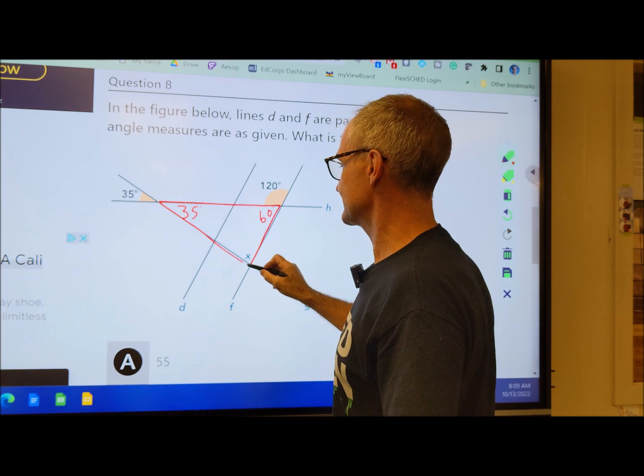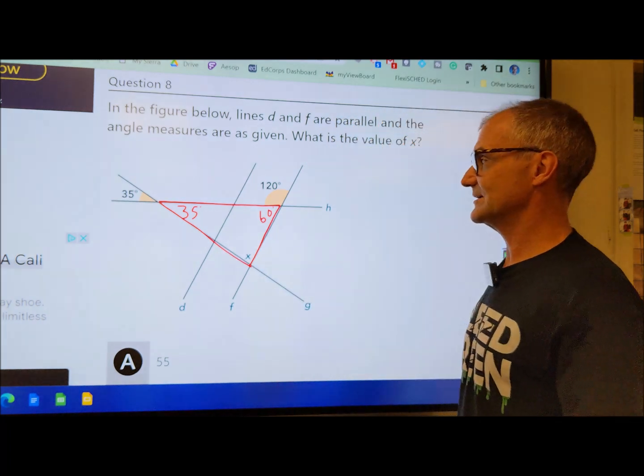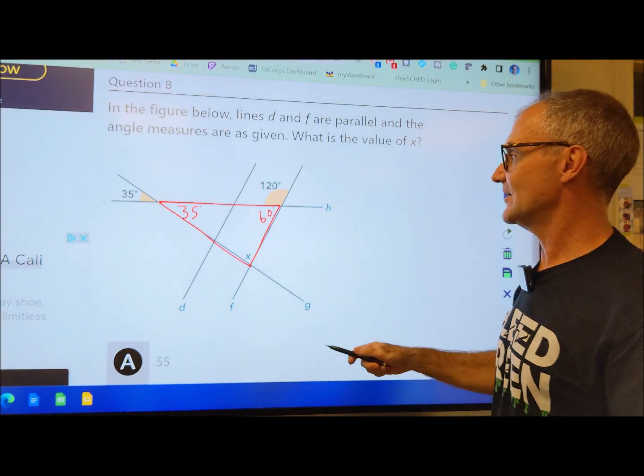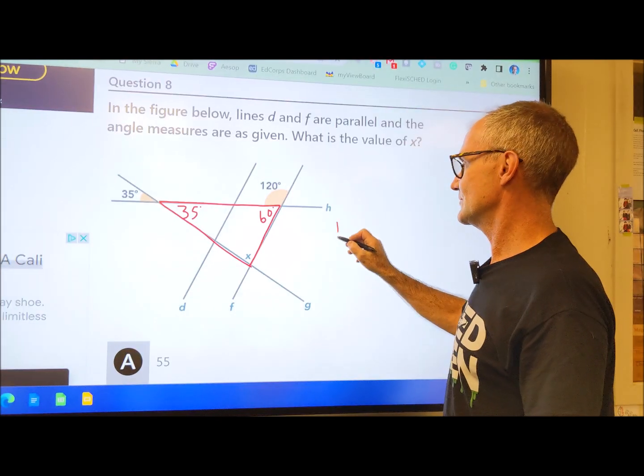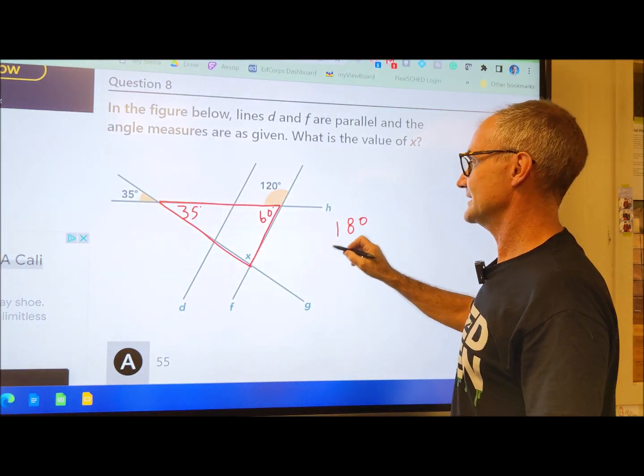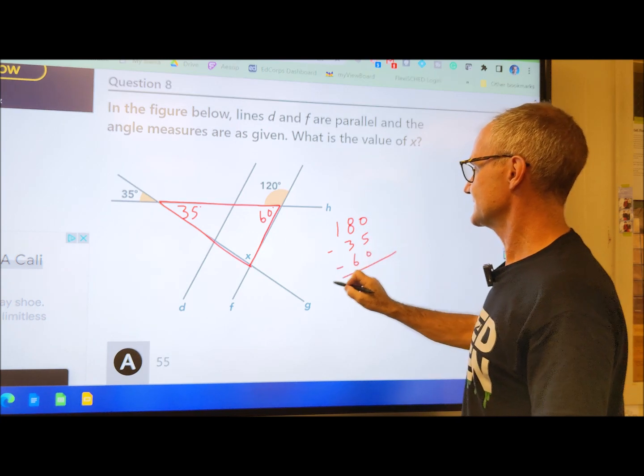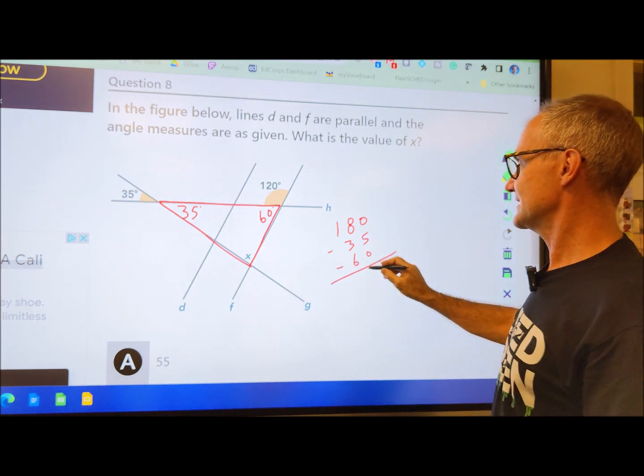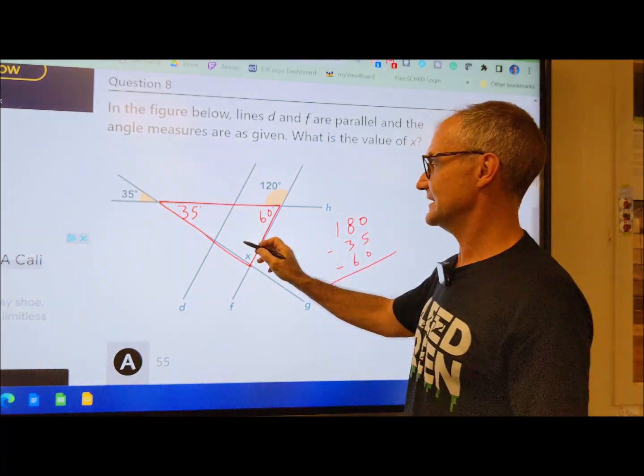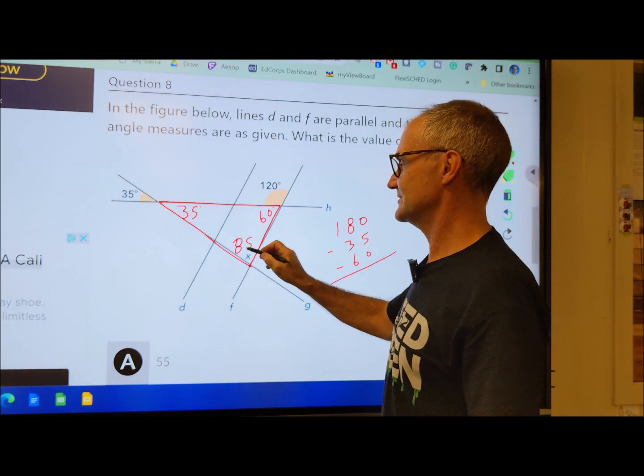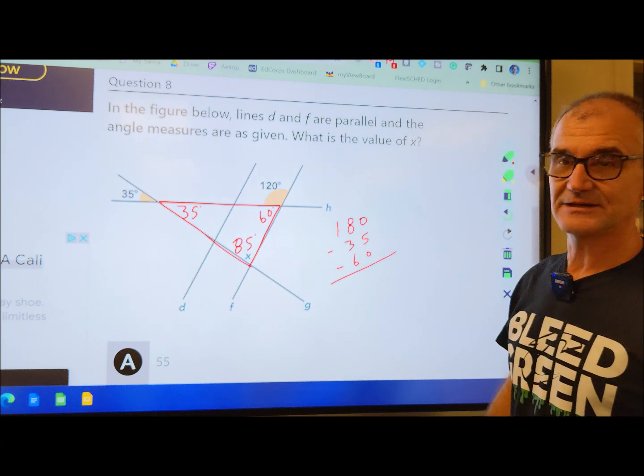So I need to find the third angle in a triangle. All three angles add up to 180. So if I do 180 minus the 35 minus the 60 degrees, 180 minus 95 will leave me with 85. And the correct answer is 85 degrees for that angle there.